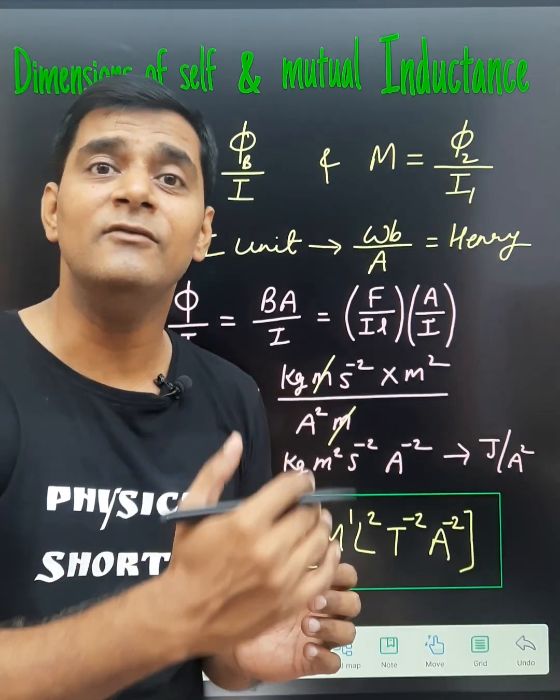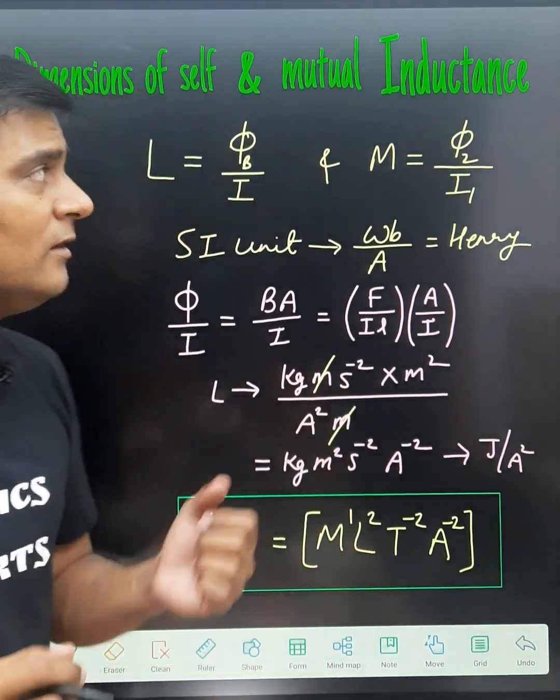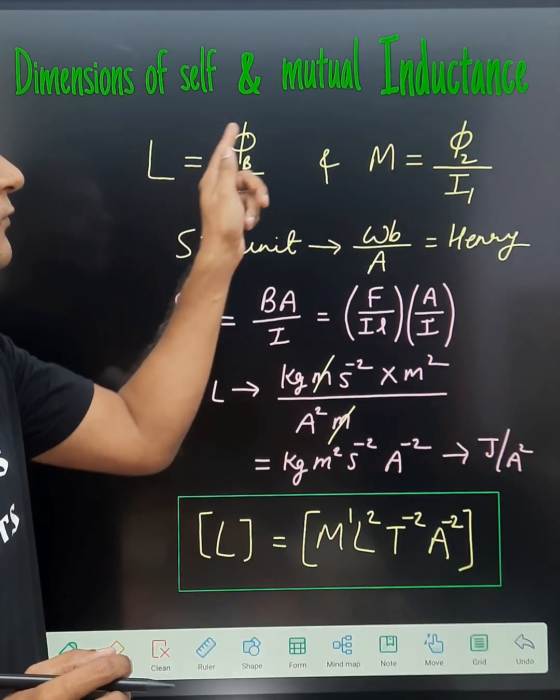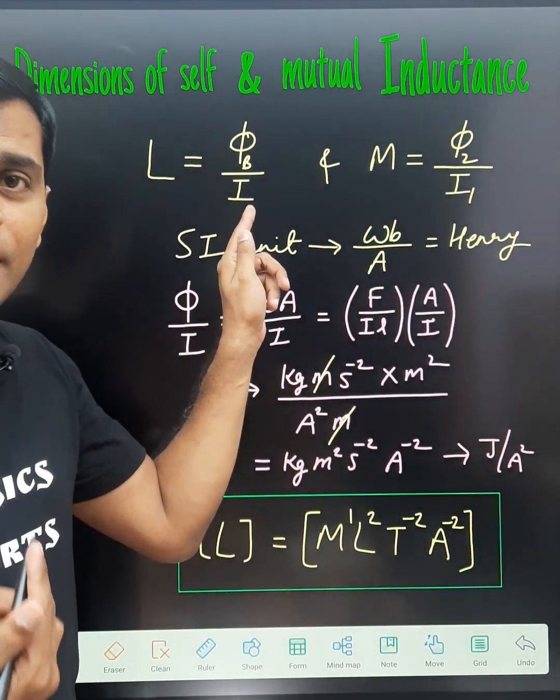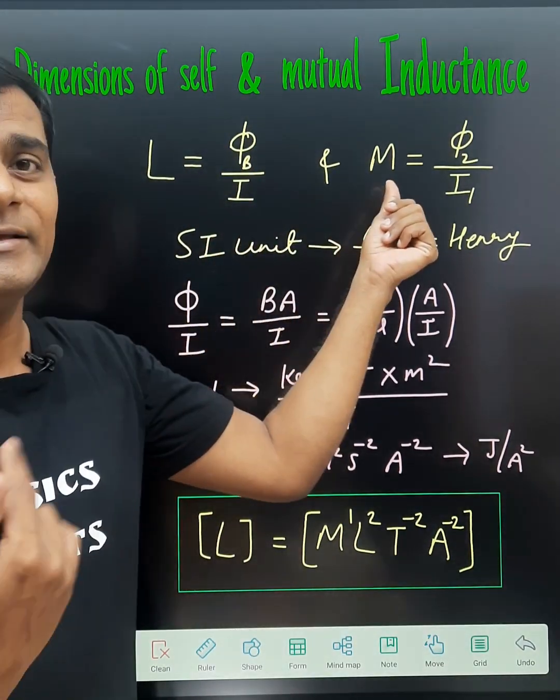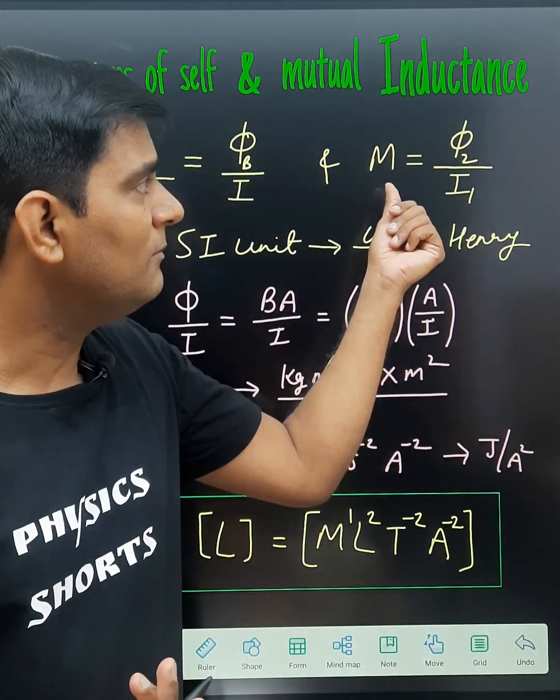Here you will get dimensions of self and mutual inductance. The self-inductance is given by L = φB/I, that is magnetic flux upon current, and the mutual inductance between two current-carrying coils is given by M = φ2/I1.